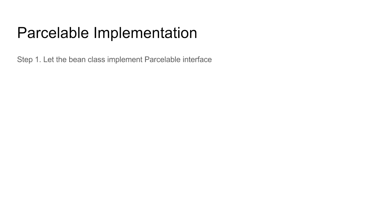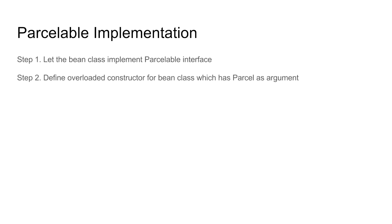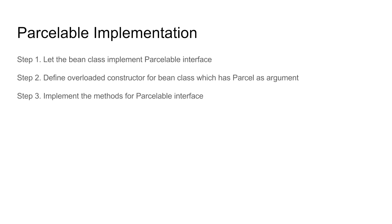To implement this, you have to make sure the bean class implements the Parcelable interface rather than the Serializable interface. Then you have to define an overloaded constructor for the bean class which takes a Parcel as the parameter. Usually for a bean class you don't create any constructors because you get the default constructor, but to make it work with Parcelable you have to implement a constructor with Parcel as the argument.